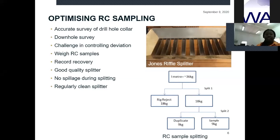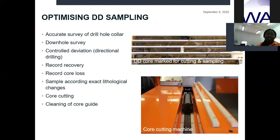One major disadvantage of RC sampling is that samples cannot be taken accurately with respect to any geological boundaries or contacts. Diamond drilling is particularly valuable when samples have to be taken within strict geological limits. Factors such as geology, structure, or alteration influence how a diamond core will be sampled.